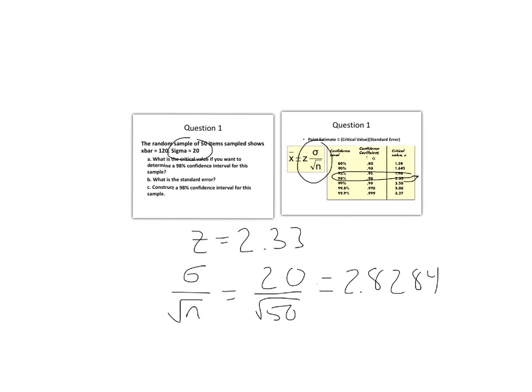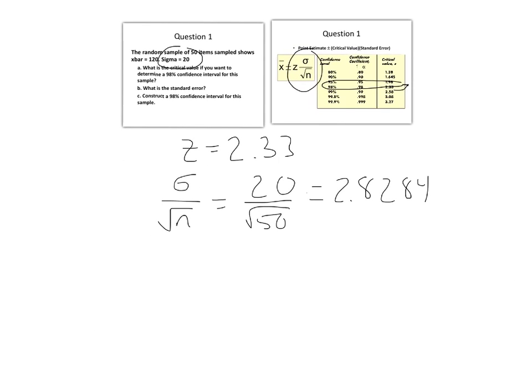Now we have everything after the plus or minus, or the margin of error, and we can calculate that. Our equation is point estimate plus or minus critical value times standard error. So we have 120 plus or minus 2.33 times 2.8284.